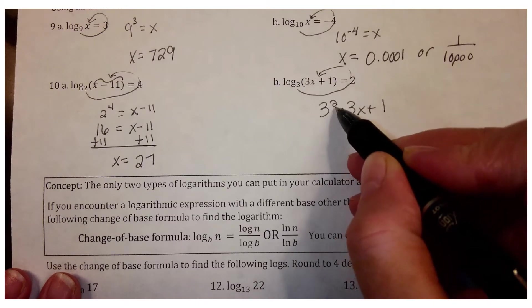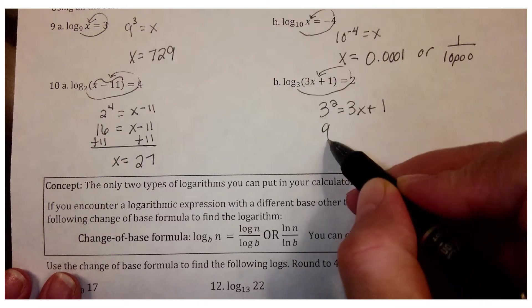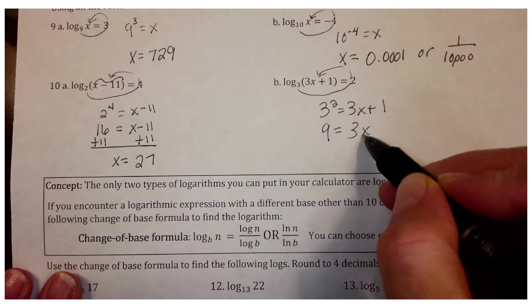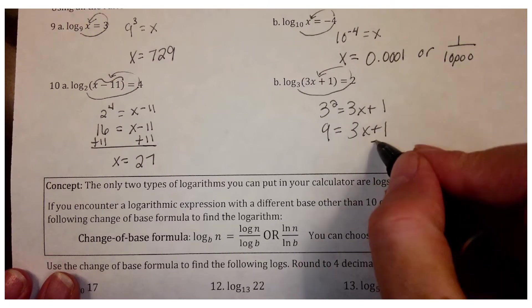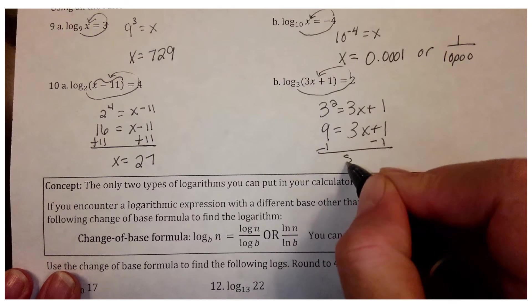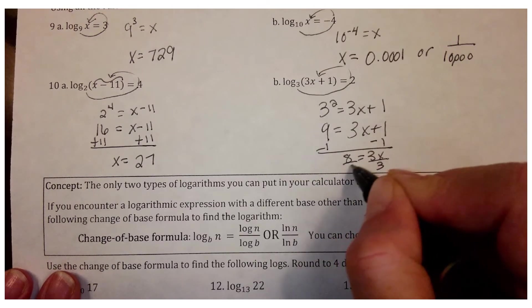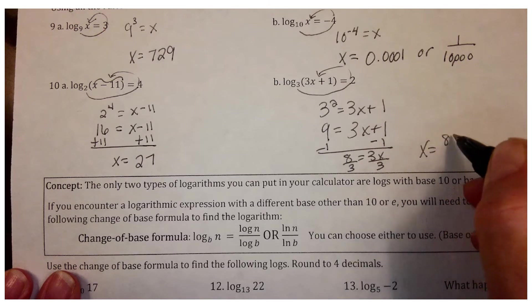So 3 squared would give me 9 equals 3x plus 1. And now you have a linear equation that you just solve like you always have. So minus 1, this is 8, equals 3x, divide by 3. And my answer is just 8 thirds.